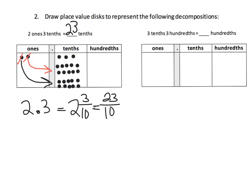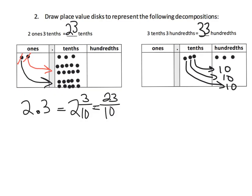Using the same idea to change values into hundredths: we have three tenths and three hundredths. We place three tenths and three hundredths on the chart. Each tenth gets converted into ten hundredths — so this becomes ten hundredths, this becomes ten hundredths, and this becomes ten hundredths — giving us thirty hundredths total, plus the three hundredths already there: thirty-three hundredths. So three tenths and three hundredths equals 0.33.